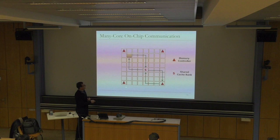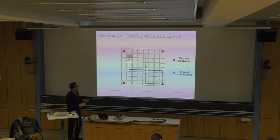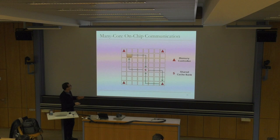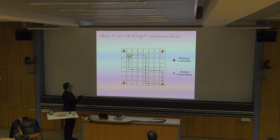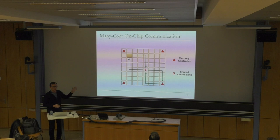You may map data to memory controllers using cache block interleaving — cache block zero maps here, one maps here, two maps there, and so on. Consecutive cache blocks are in consecutive memory controllers. That may cause a lot of interference. If a core is accessing consecutive cache blocks in a streaming fashion, it sends requests to each memory controller in round-robin fashion, which could cause a lot of contention if all cores are streaming.